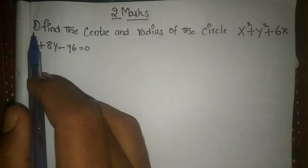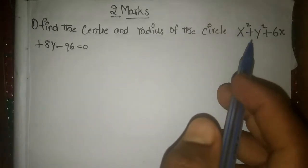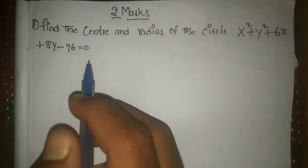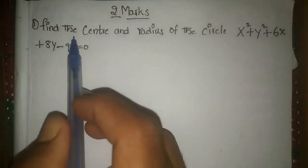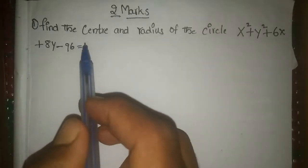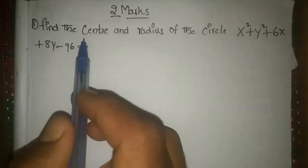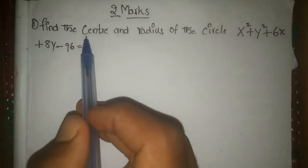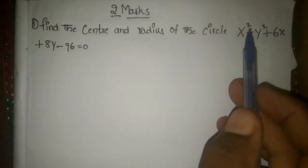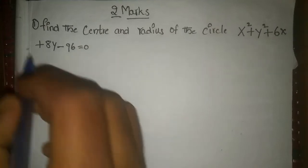The first problem is: find the center and the radius of the circle x² + y² + 6x + 8y - 96 = 0. We have to carefully observe this problem and understand what is given and what we have to solve. We have to find the center and radius of the circle with this equation.